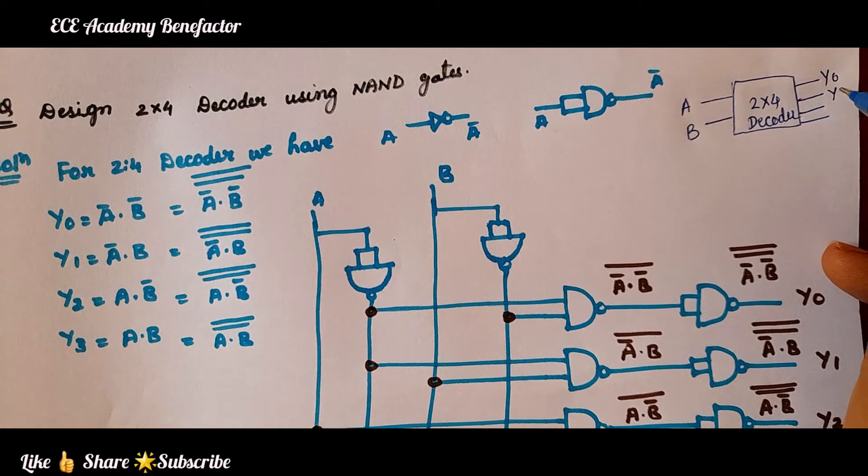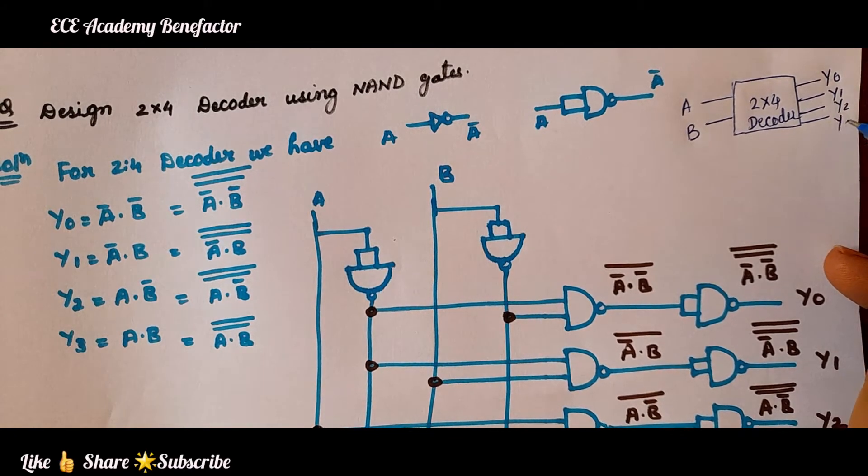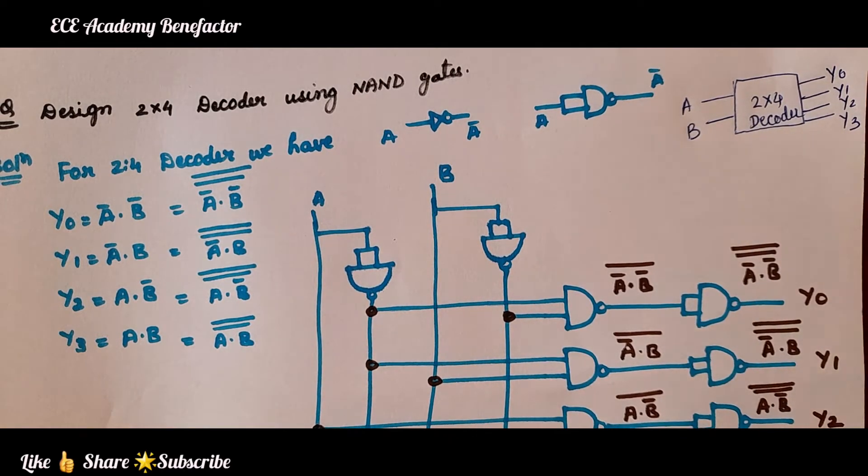Let us say it is y0, y1, y2 and y3. So, 2×4 decoder is having 2 inputs and 4 outputs: y0, y1, y2, y3.